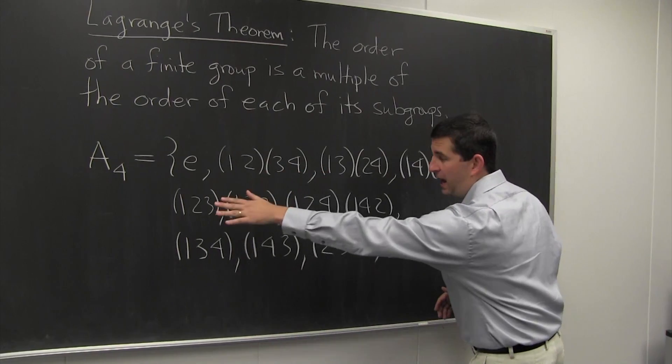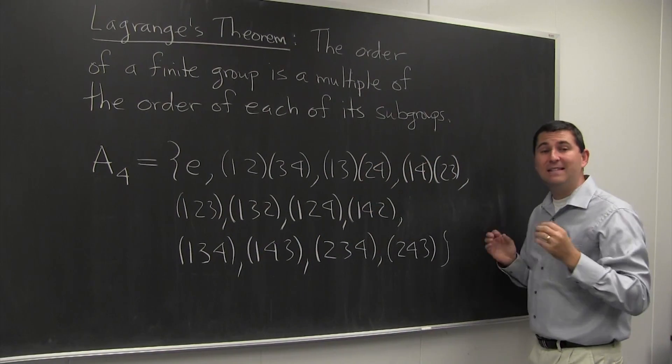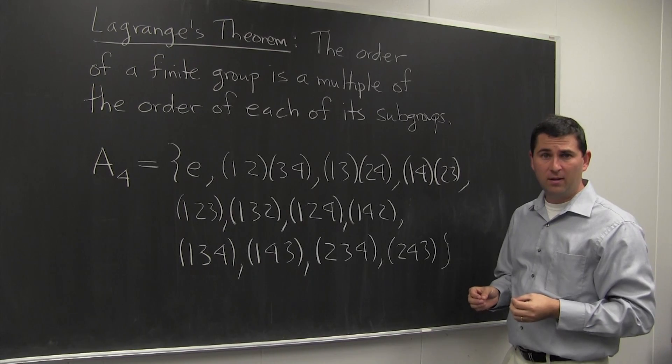Okay, this subgroup, A4, has 12 elements, and it does not have a subgroup of order 6. Well, how's that possible?